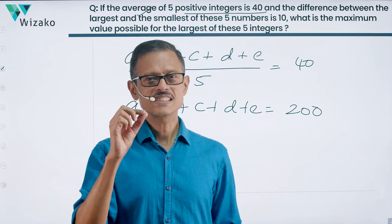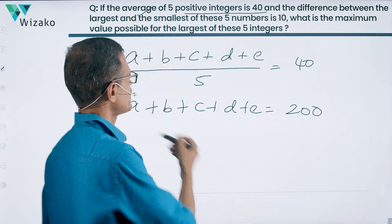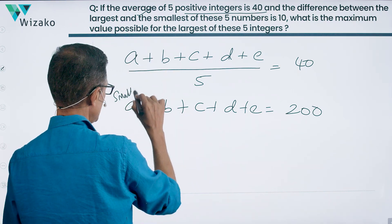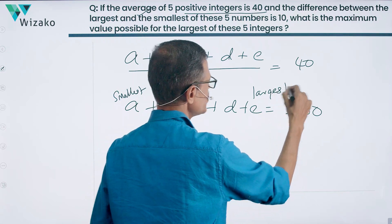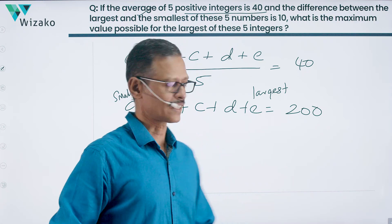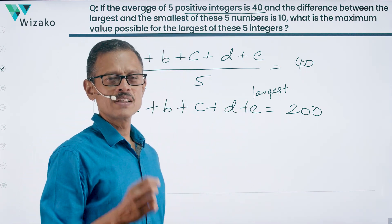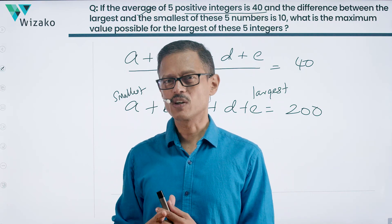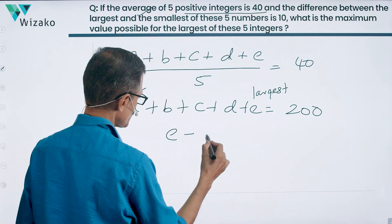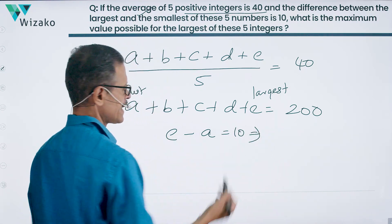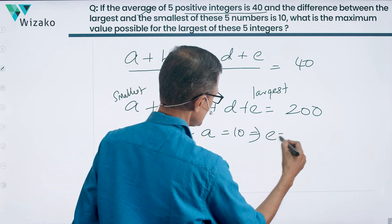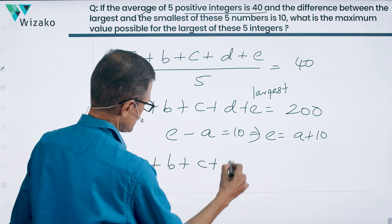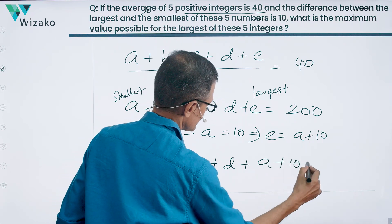The difference between the largest and the smallest of these 5 numbers is 10. Let's take A to be the smallest and E to be the largest. So E equals A plus 10. We can rewrite the equation as A plus B plus C plus D plus (A plus 10) equals 200.